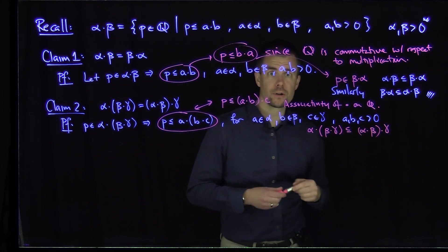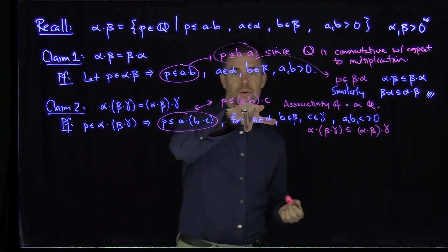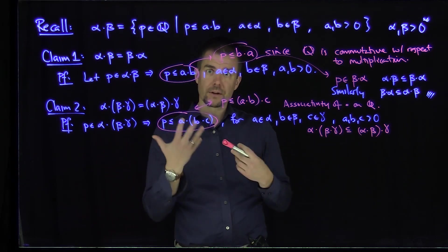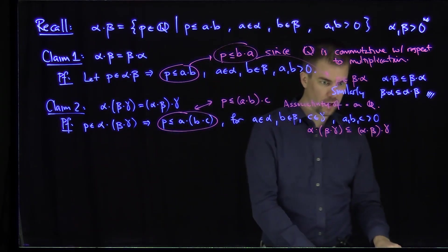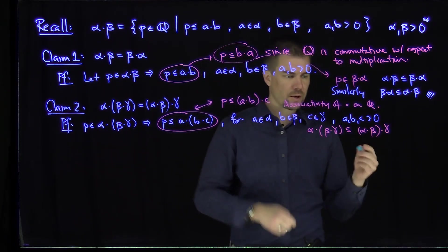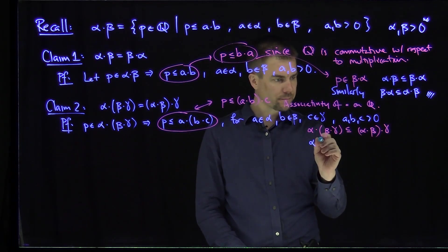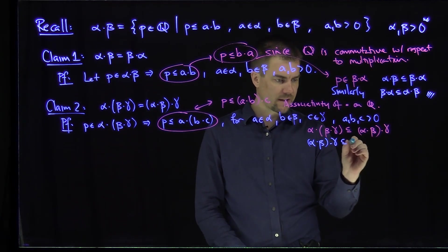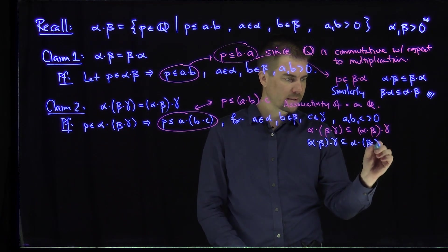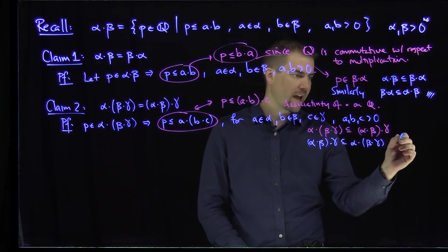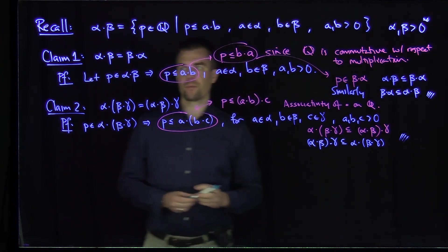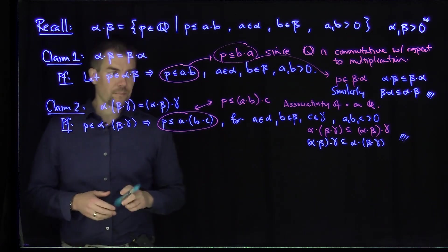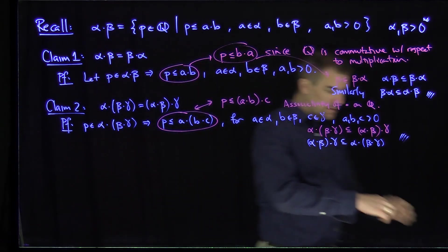The reverse inclusion is exactly the same — if I start with the other representation, I can write the other form immediately, so I get the opposite inclusion. So I can also conclude that α·(β·γ) is contained in (α·β)·γ. And we have associativity of the multiplication operation on ℝ.